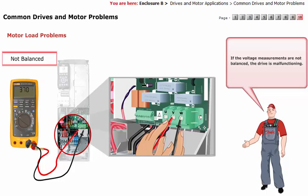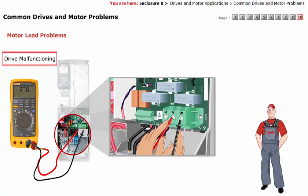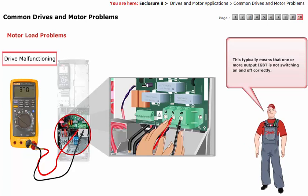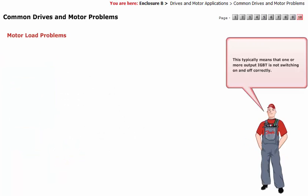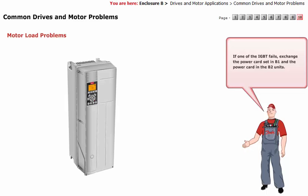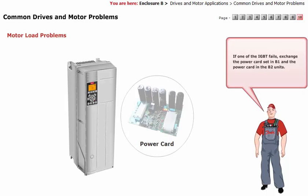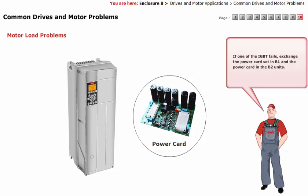If the voltage measurements are not balanced, the drive is malfunctioning. This typically means that one or more output IGBTs are not switching on and off correctly. If one of the IGBTs fails, exchange the power card set in B1 units and the power card in the B2 units.